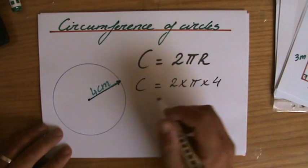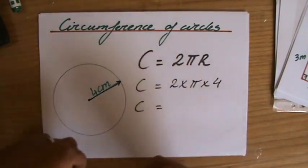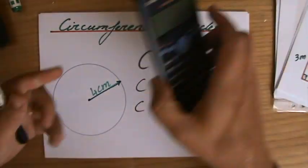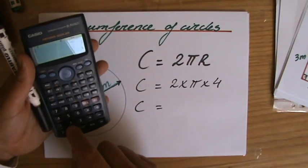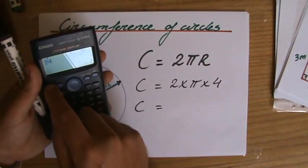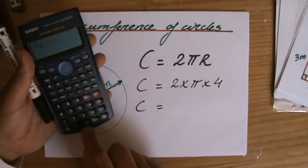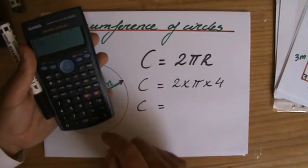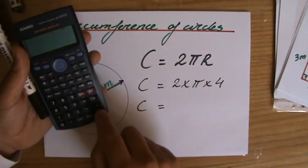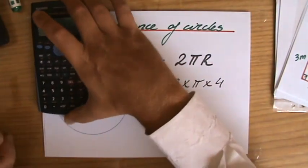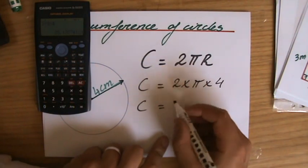So times 4. What does the circumference equal to? I can just grab my calculator now. It is 2 times pi. Make sure you know where your pi button is. For me it's shift and then the standard form button. Times the radius which is 4 equals. I'll put it here.